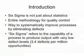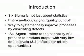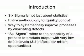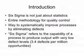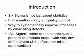Six Sigma is not just about statistics; it encompasses an entire methodology for quality control. Six Sigma techniques provide ways to systematically improve processes by eliminating defects. The term Six Sigma refers to the capability of a process to produce output with very low defect levels, namely 3.4 defects per million opportunities.